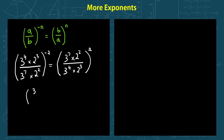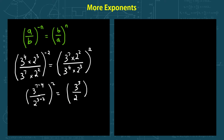Let's solve it. We group the 3s together: on top we have 7 minus 4, and the 2s give us 3 minus 2 at the bottom. All of this to the power of 2. This equals 3 to the power of 3 over 2 to the power of 1, squared — which works out to 3 to the power of 6 over 2 to the power of 2.